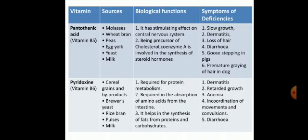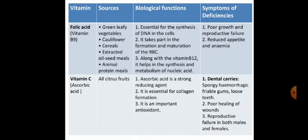Vitamin B5 deficiency also causes goose-stepping in pigs and premature graying of hair in dogs. Pyridoxine or vitamin B6 is mostly sourced from cereal grains, byproducts, brewer's yeast, rice bran, and pulse meals. Its biological function includes being required for protein metabolism, absorption of amino acids from the intestine, and synthesis of fats, proteins, and carbohydrates. Deficiency symptoms include dermatitis, retarded growth, anemia, incoordination of movements, convulsions, and diarrhea.